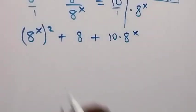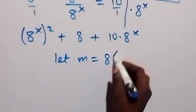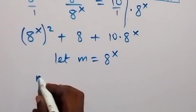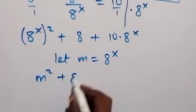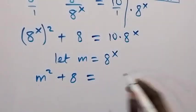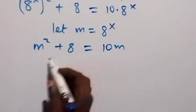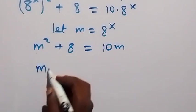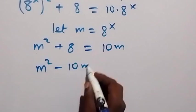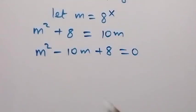We have 8 raised to power x in common, so let's use a letter to represent that. Let M equal 8 raised to power x. Then this becomes M squared plus 8 equals 10M. Taking everything to one side, this becomes M squared minus 10M plus 8 equals zero.